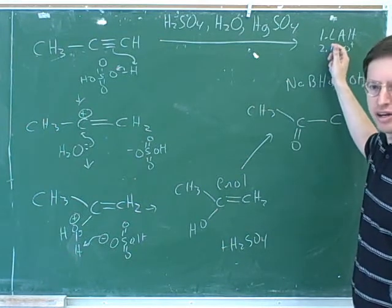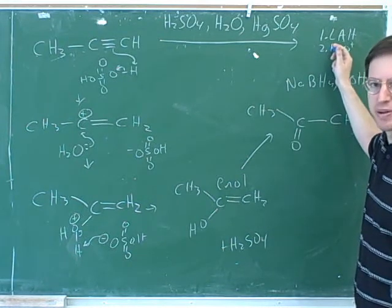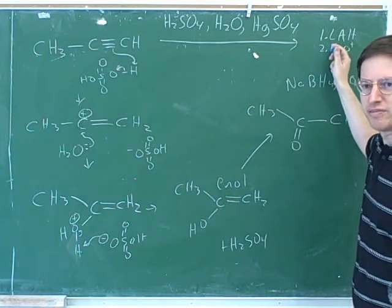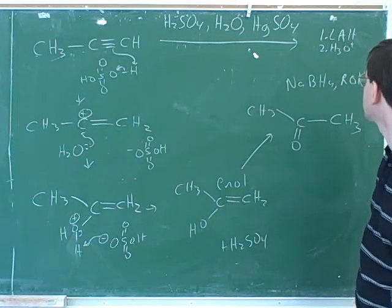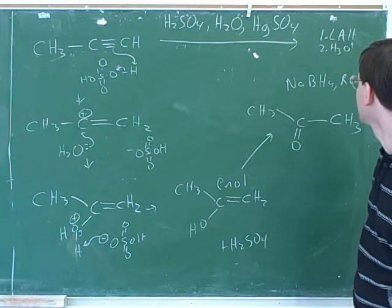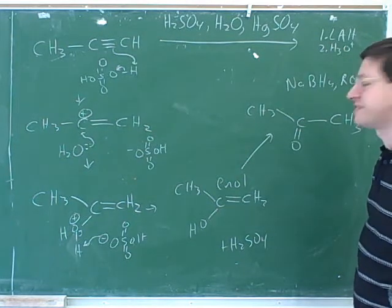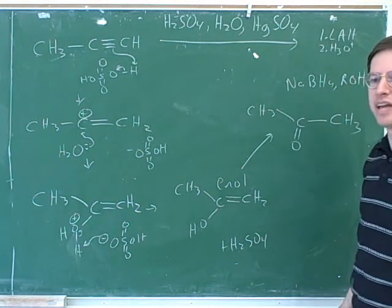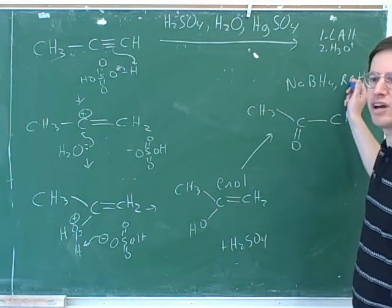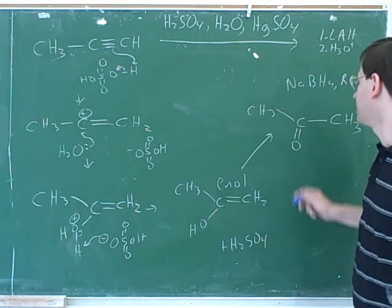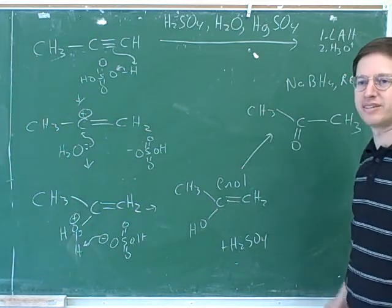Lithium aluminum hydride has to be added in two separate steps. If you go back to the handout on R- and H-, this is laid out. Sodium borohydride is put in at the same time as the protonating solvent. Lithium aluminum hydride and Grignards have to be added separately from the protonating solvent. And if you would just add NaBH4 without the protonating solvent, you would end up with an O-.